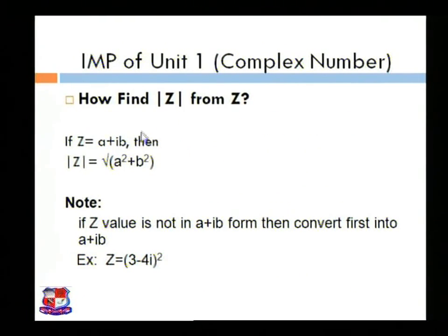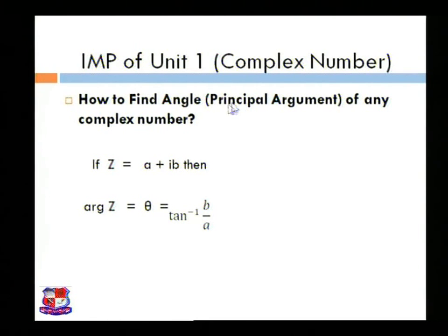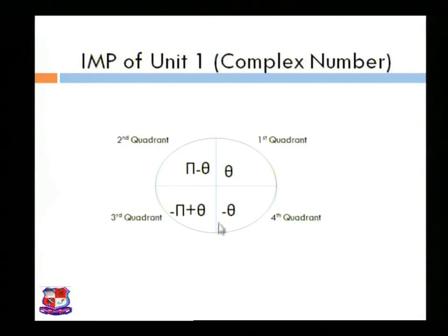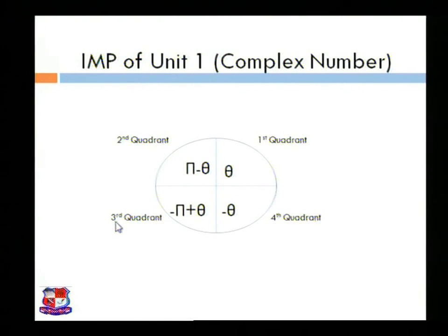We already discussed how to find the angle of z. If z is equal to a plus ib, then angle of z, that is theta, is tan inverse of b by a. This is the quadrant rule: if the angle is in the first quadrant, put angle as theta; second quadrant, convert to pi minus theta; third quadrant, minus pi plus theta; fourth quadrant, minus theta.